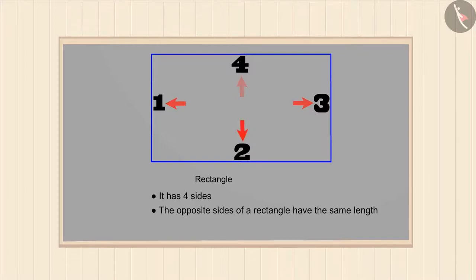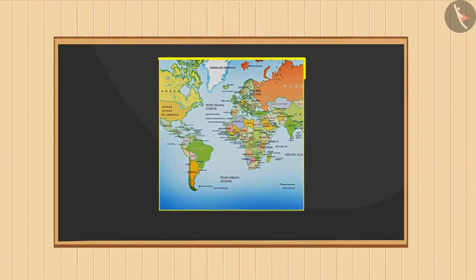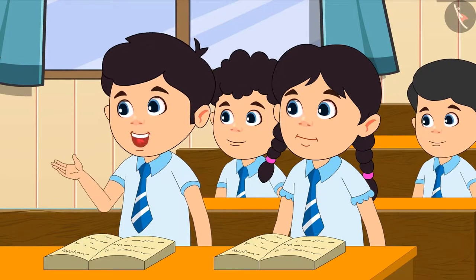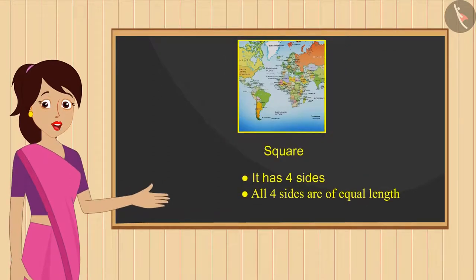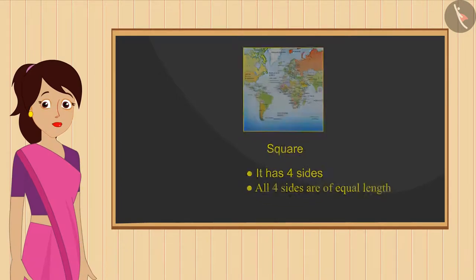Now tell me, which shape shall we get? This is a circle. A square is a shape that has four sides and all four sides are of the same length. Now tell me, if we trace this bangle on a paper, which shape shall we get?